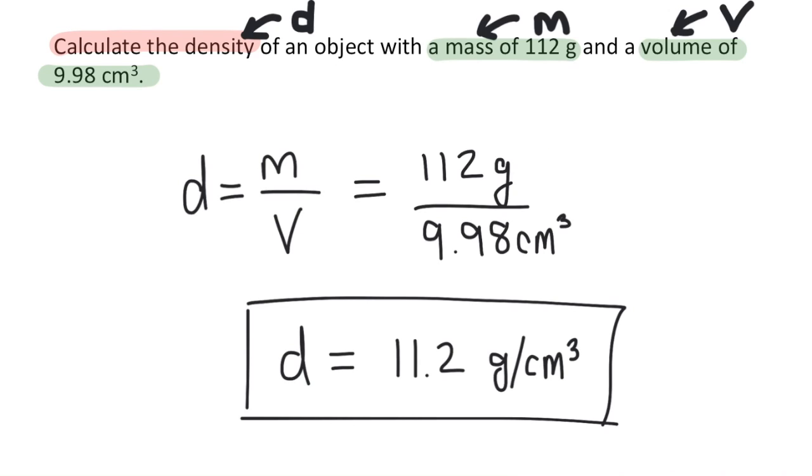The units for density always combine the units that were used for mass and volume. So that's why it's grams per centimeters cubed.